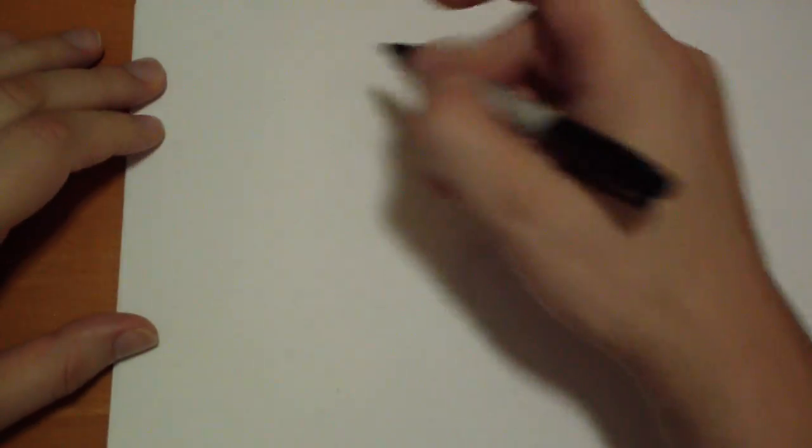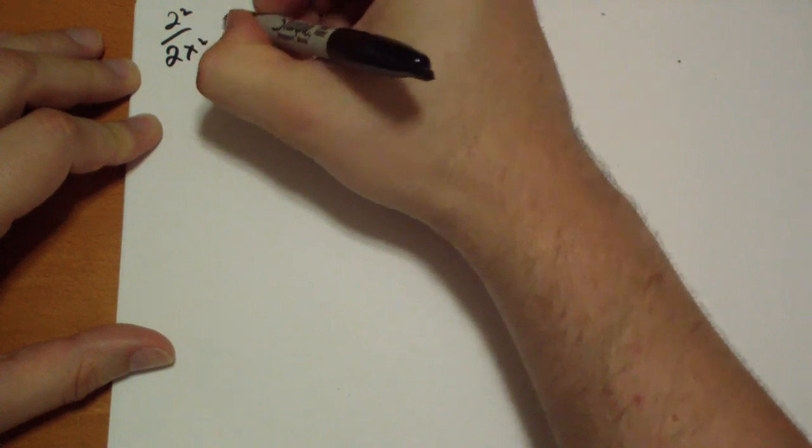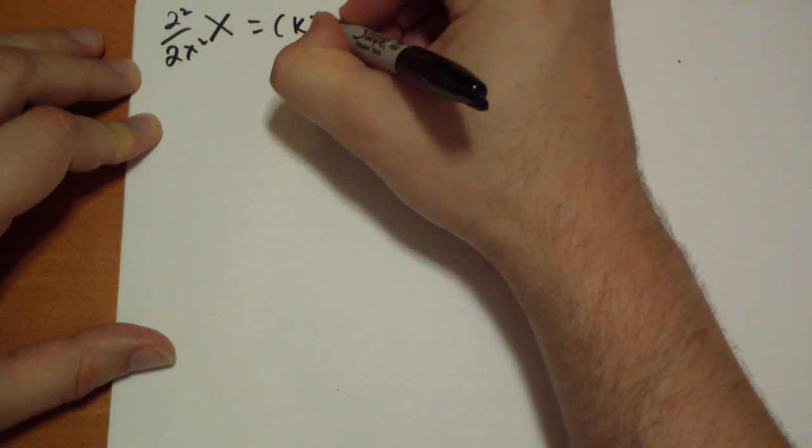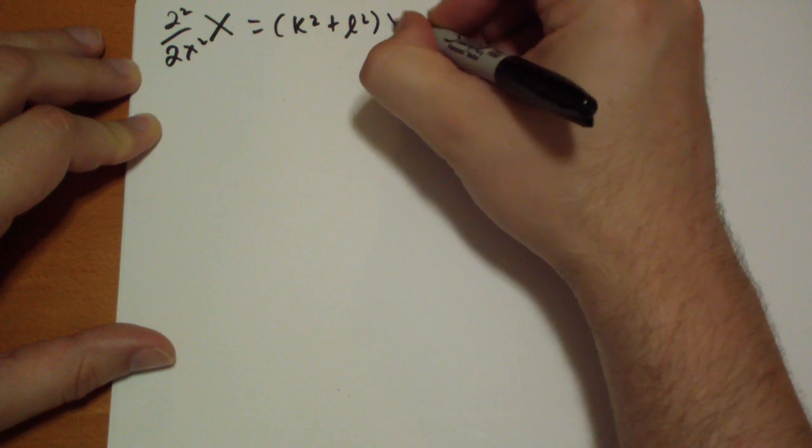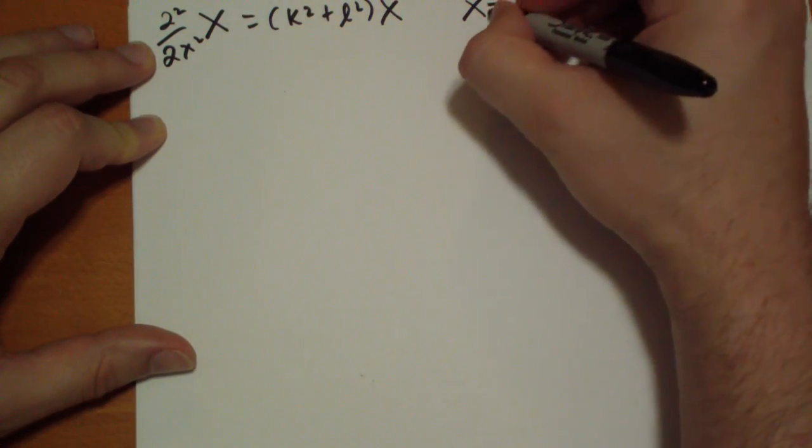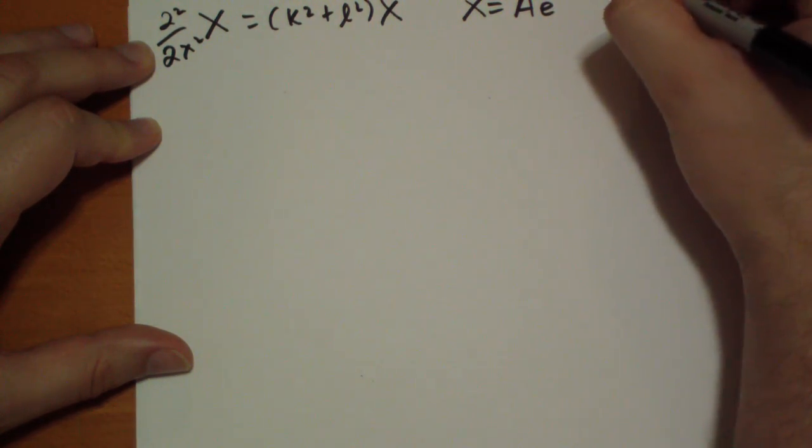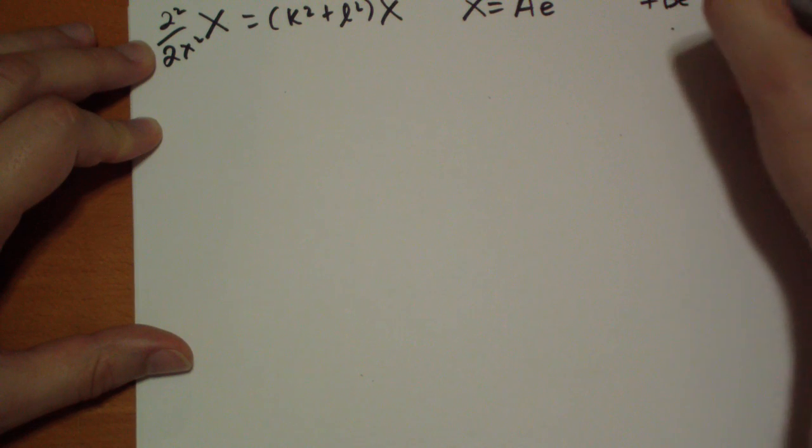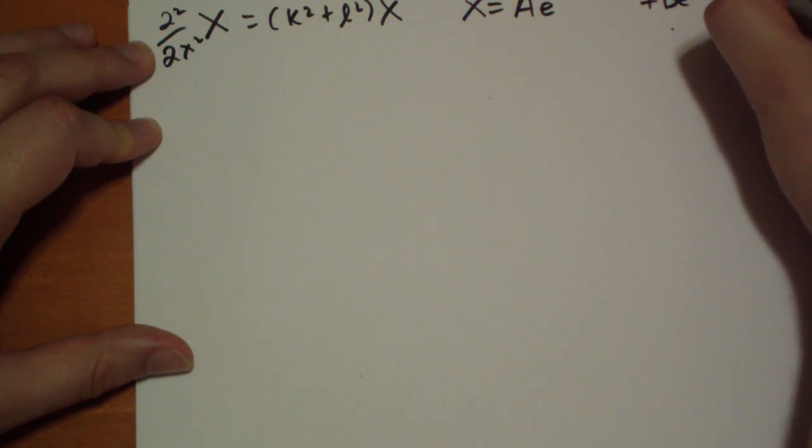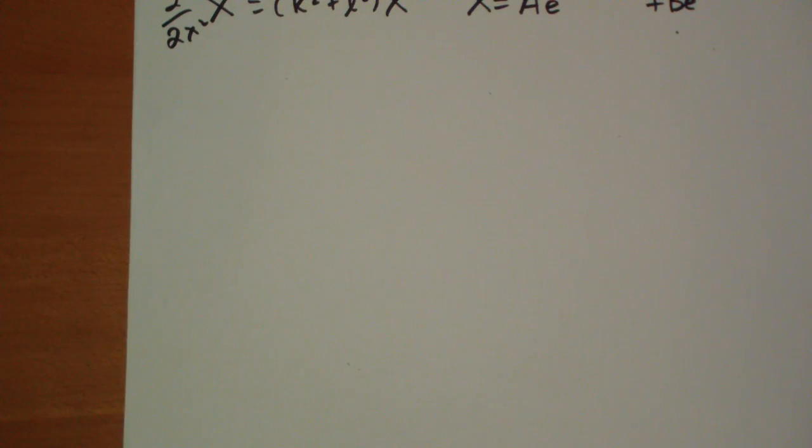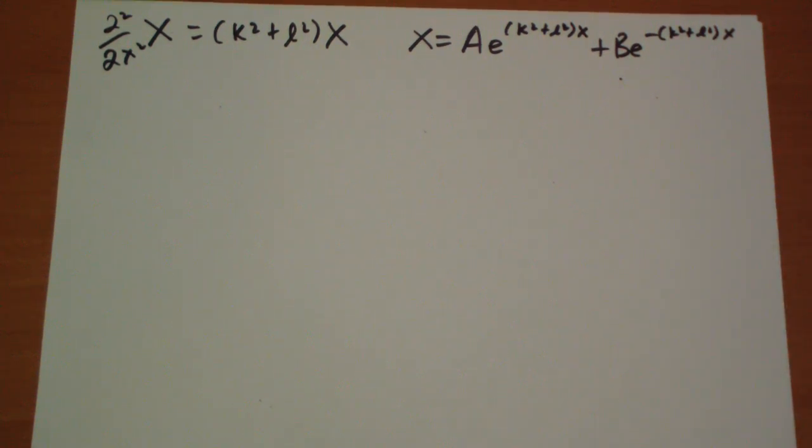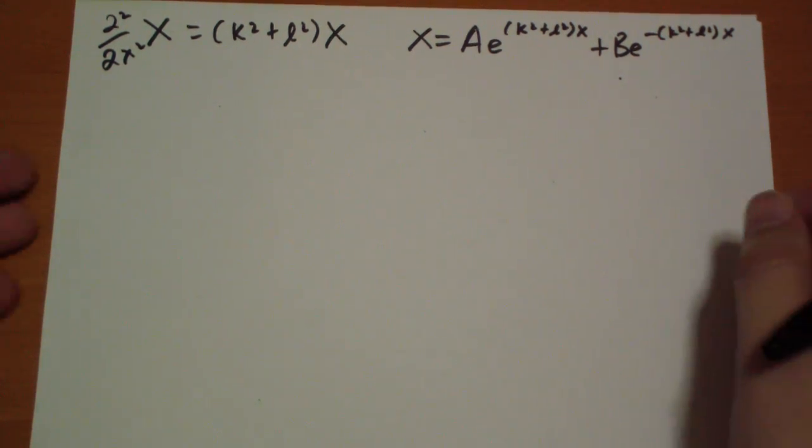So, solving for the x part, let me go a little closer here. d squared by dx squared of x is equal to k squared plus l squared of x. And obviously, so we get a solution. x is equal to a e to the square root of k squared plus l squared x plus b e to the minus square root of k squared plus l squared x. Oh, you can't even see that, can you? There you go. Sorry about that. Yes, it is true. I do these entirely in one take. I've tried to piece them together. I'm not that good of an editor. So, if I make a mistake, I have to start all over again.